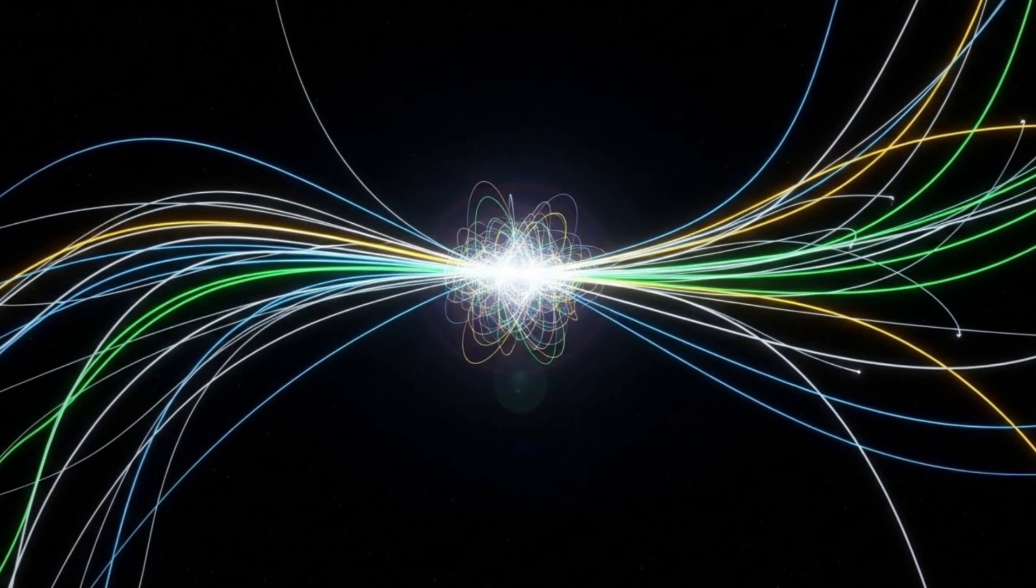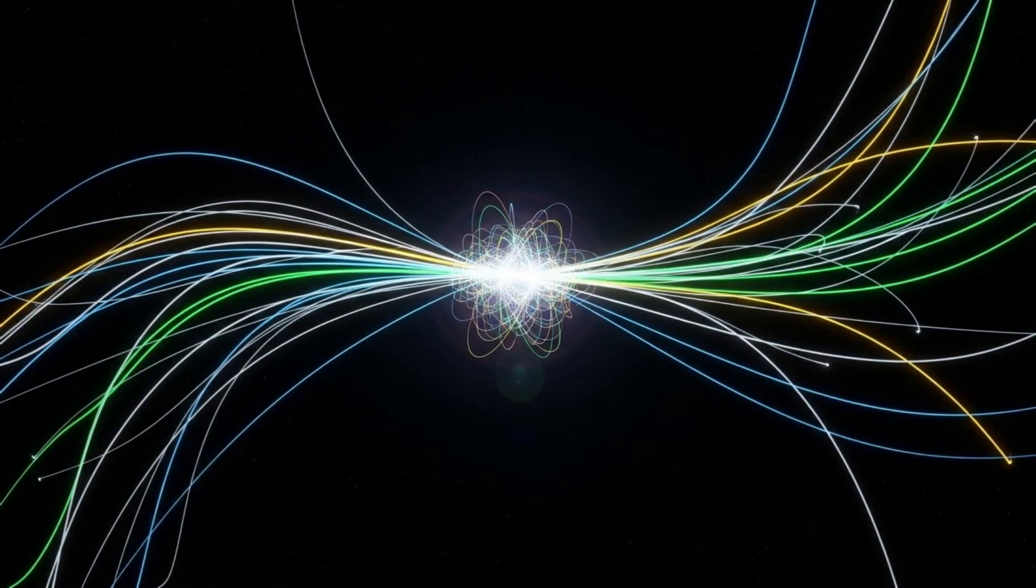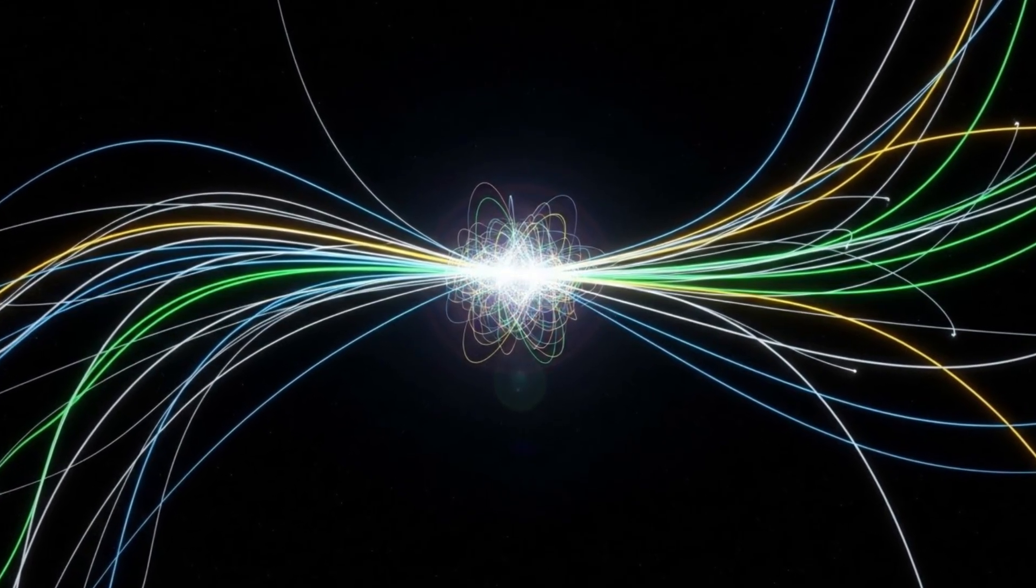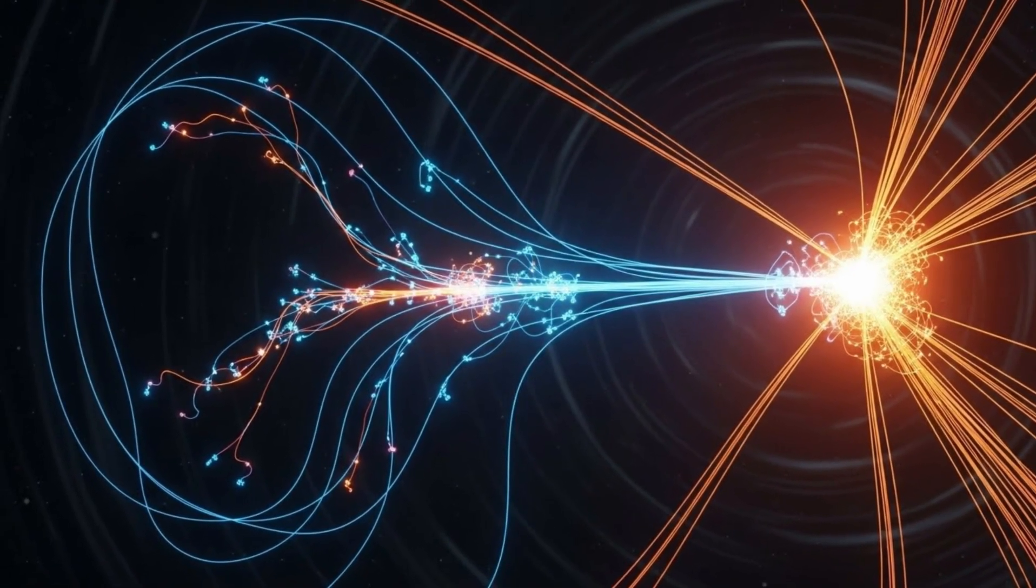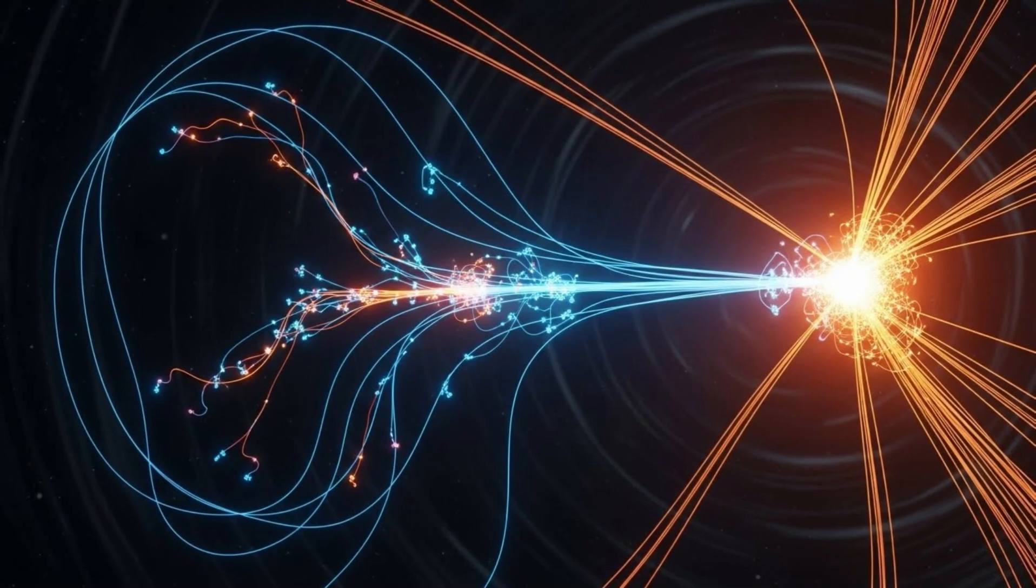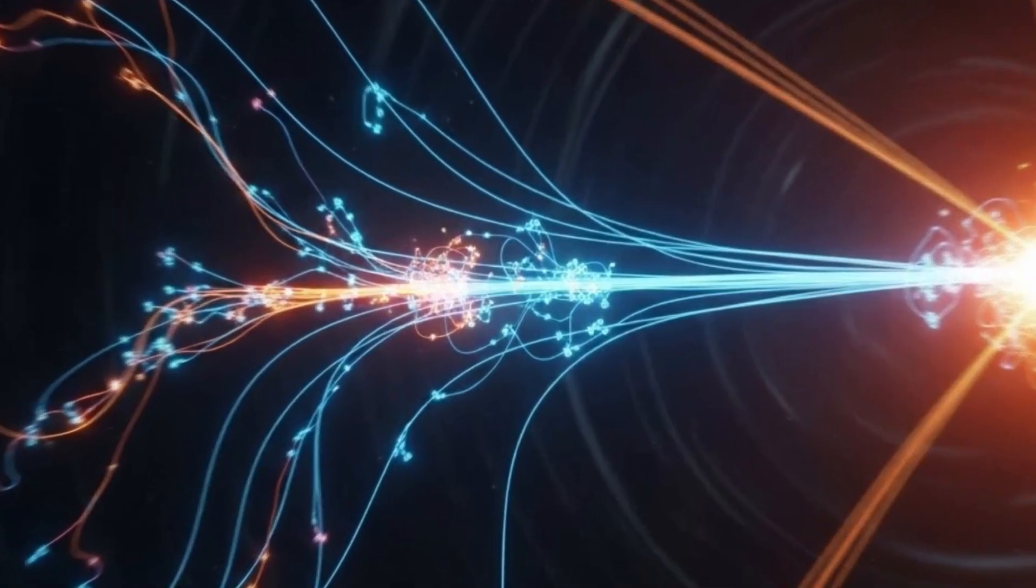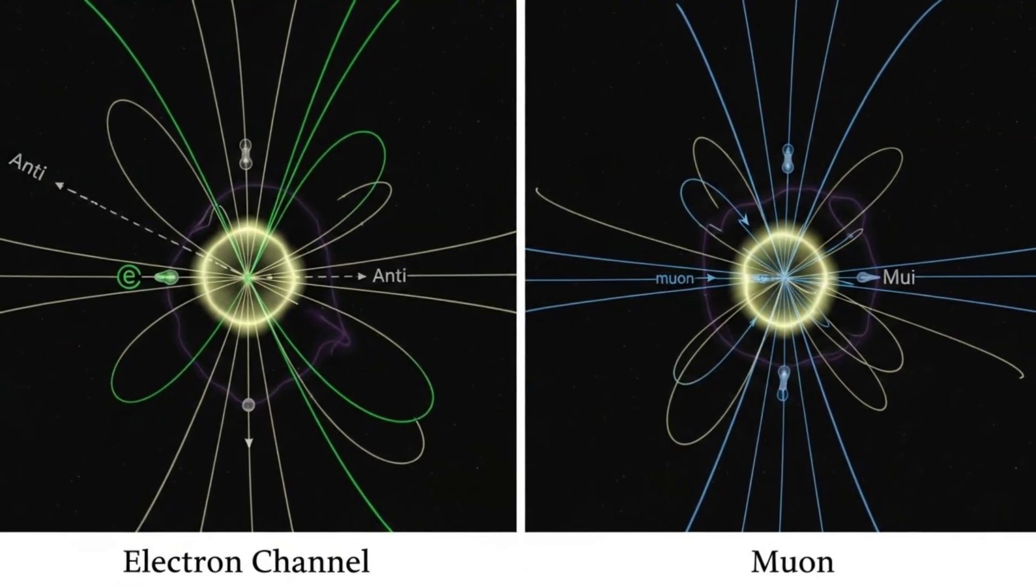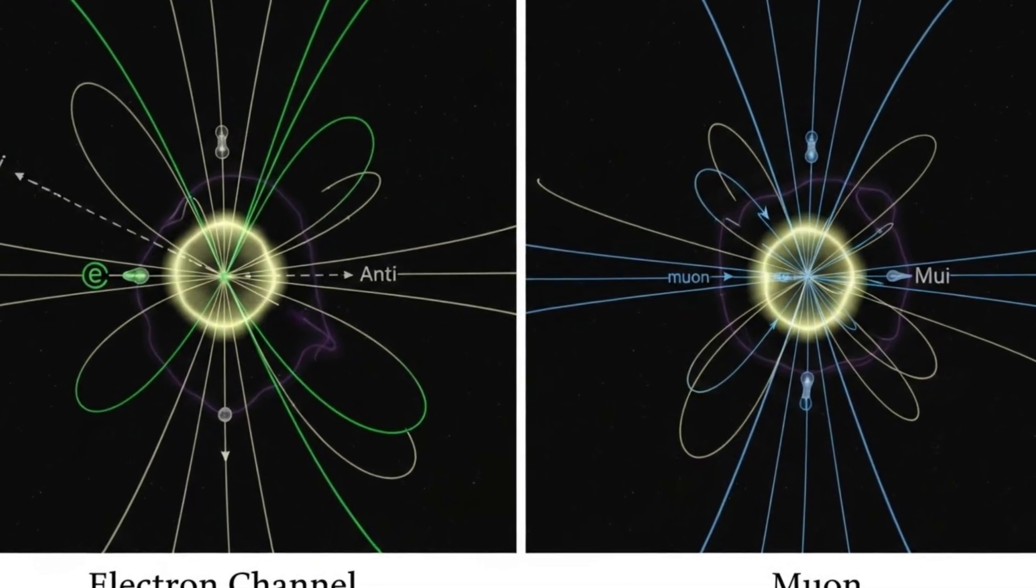But there's another possibility, one that's quieter but just as profound. What if this anomaly teaches us that the universe is more delicate than we realized? That the rules we think are absolute are actually approximate, good enough for everyday life, but not quite right at the edges? It's a humbling thought. For all our equations and experiments, we're still learning the grammar of existence. And every anomaly, every deviation, every stubborn little crack in the data is the universe correcting our pronunciation.